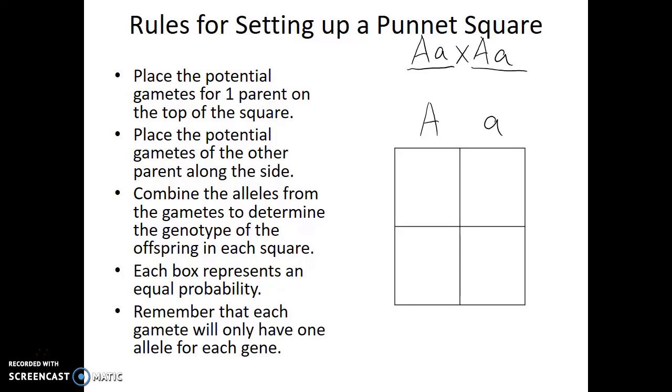Now for the second parent, we also figure out which gametes they can make. But those gametes go in front of the row. We now have the potential gametes for the first parent along the top, the potential gametes for the second parent along the side. And each of these boxes represent possible offspring that could be formed by this breeding pair.